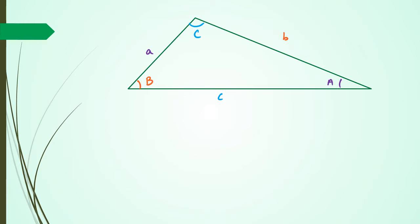Alright, so with the cosine rule, we really don't want to use anything to do with the sine rule at all, even with basic trig. So what we're going to do is split this up into two right-angle triangles.